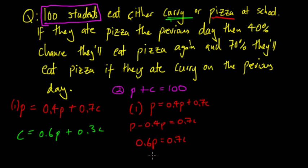Then we can get that p is equal to 0.7c over 0.6, and that's just equal to 7 over 6. You can times the top and bottom by 10 and then we get 7c over 6. So we get p equals 7c over 6.